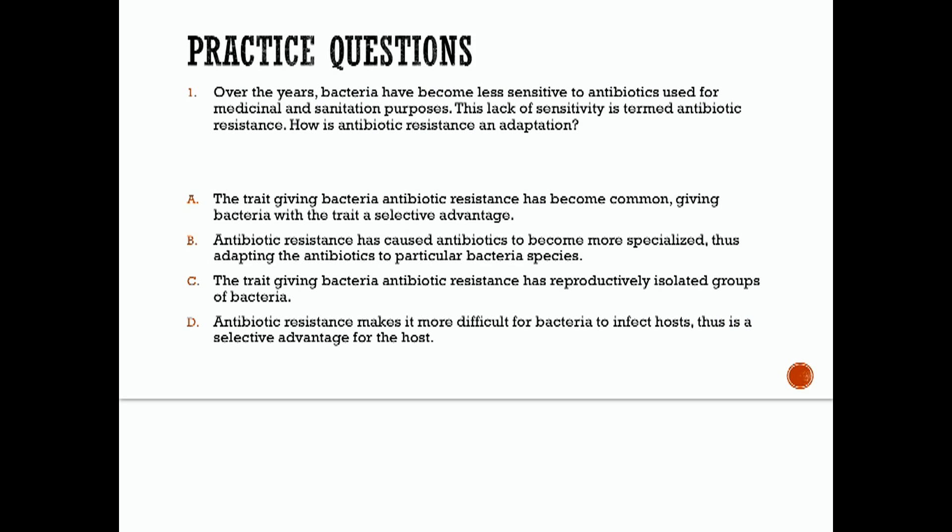Last practice questions of this biology series. Number one, over the years, bacteria have become less sensitive to antibiotics used for medicinal and sanitation purposes. This lack of sensitivity is termed antibiotic resistance. How is antibiotic resistance an adaptation? Pause this, look it over, and see what you come up with. An adaptation is an inherited trait that has become common in a population because the trait provides a selective advantage. A bacterium that is resistant to destruction by an antibiotic has a selective advantage over a bacterium that is susceptible to antibiotics. Because of this, according to the principles of natural selection, bacteria resistant to antibiotics have flourished and become common. If we look at our answer choices, that's going to go with A.